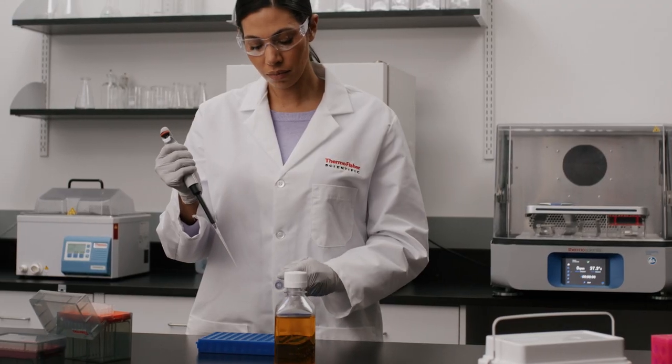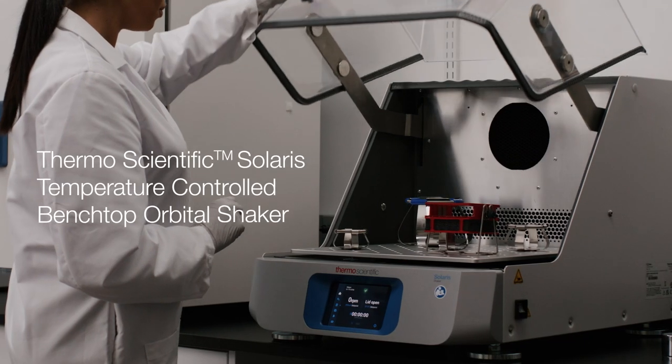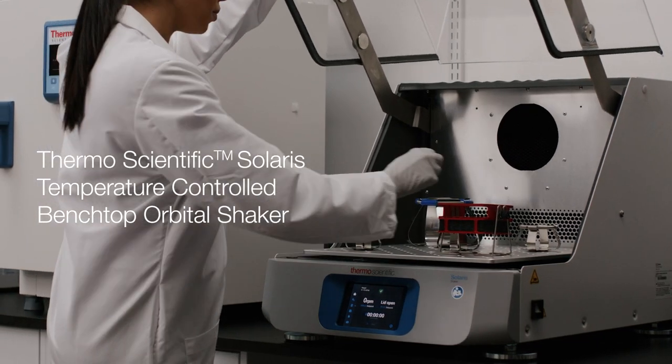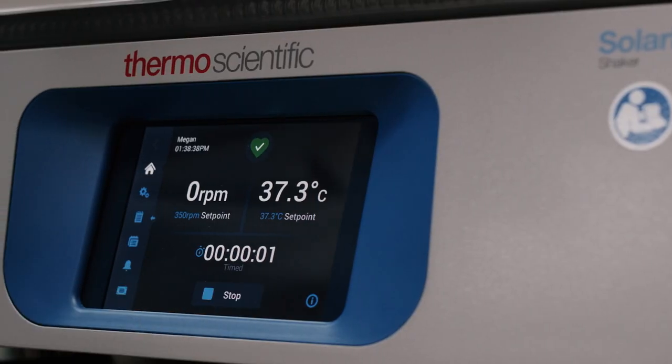Notice how Maria removes the sample, adding extra media to the tube before placing it in the ThermoScientific Solaris benchtop shaker. The sample will stay in the temperature-controlled shaker for one hour at 37 degrees Celsius.